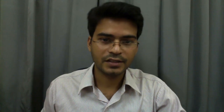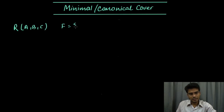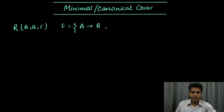To start with, let us try to understand this first with an example. Consider relation r with attributes a, b, and c, and a set of functional dependencies: a determines b, and a,b determines c.